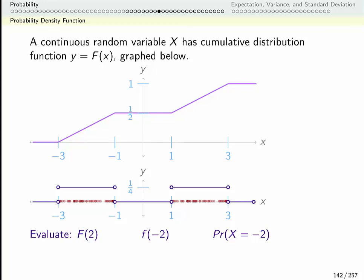Big F of two, that's talking about the cumulative distribution function. And I can see from here, that's three quarters. That means when I generate all of these random points, three quarters of them are going to be less than or equal to two. So three quarters of them are going to be in this interval here.